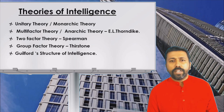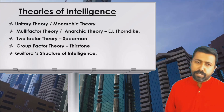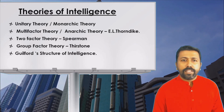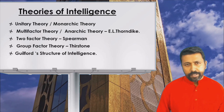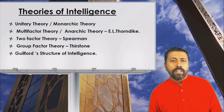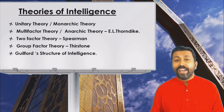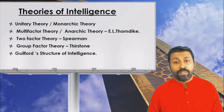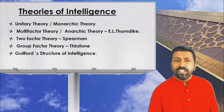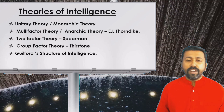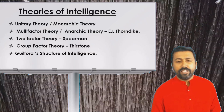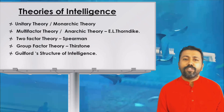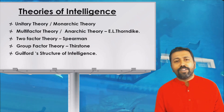Moving to intelligence — here is a list of theories related to intelligence. These include the unitary theory or monarchic theory, the multi-factor theory or anarchic theory by Thorndike, the two-factor theory of Spearman, the group-factor theory of Thurston, and Guilford's structure of intelligence. All these theories are very important — please remember the concepts and the propounders of each theory.